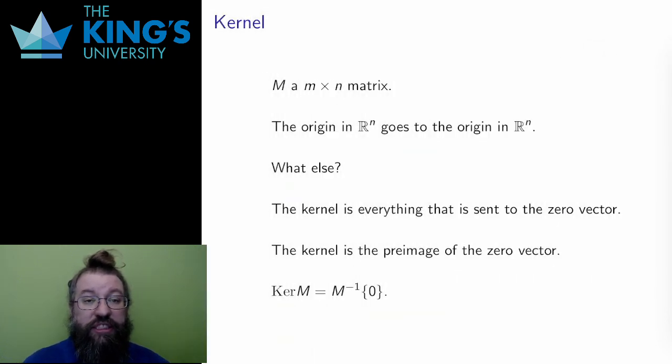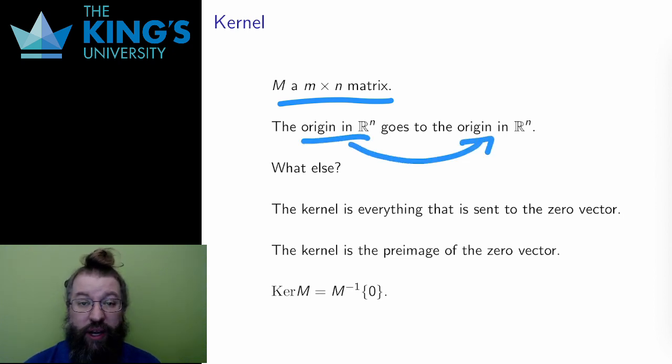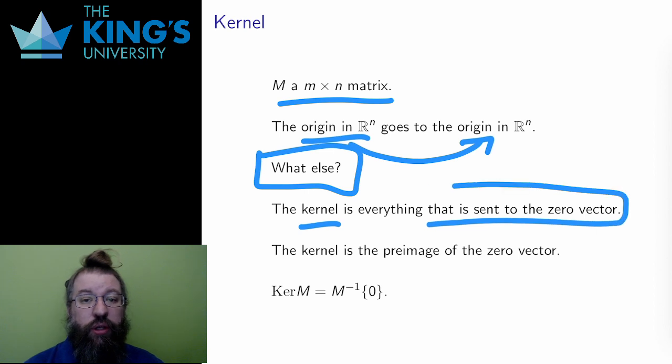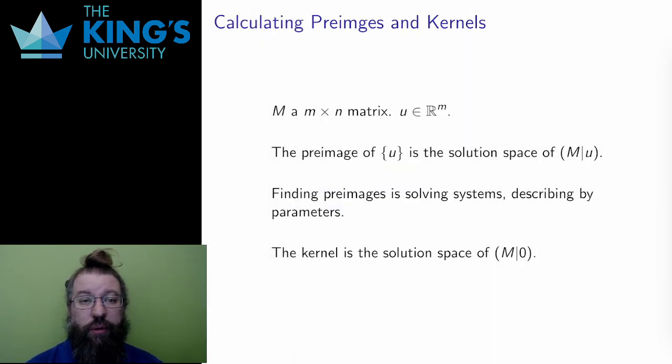Now let me ask about a very special pre-image. Same setup, M is still an m by n matrix, a transformation from R^n to R^m. I know that linear transformations preserve the origin. The origin must always go to the origin. But I can also ask, what else goes to the origin? What other vectors get sent to zero? What is the pre-image of the zero vector in the target space? The kernel is the name for this. The kernel of a transformation is everything that gets sent to zero, the pre-image of the zero vector. The notation is, as before, M^(-1)(0). And this zero, of course, is the zero vector, not the zero number.